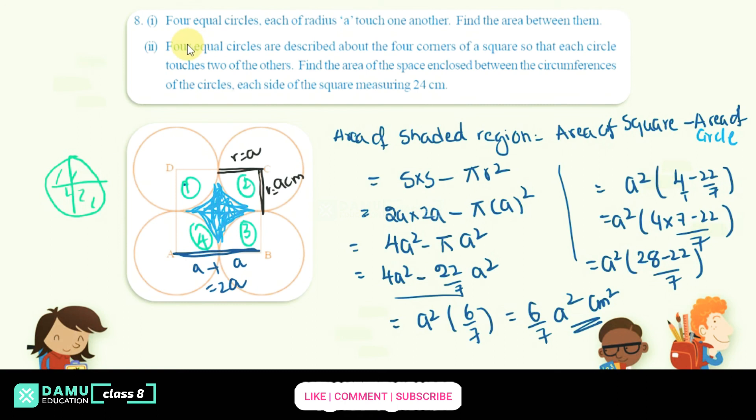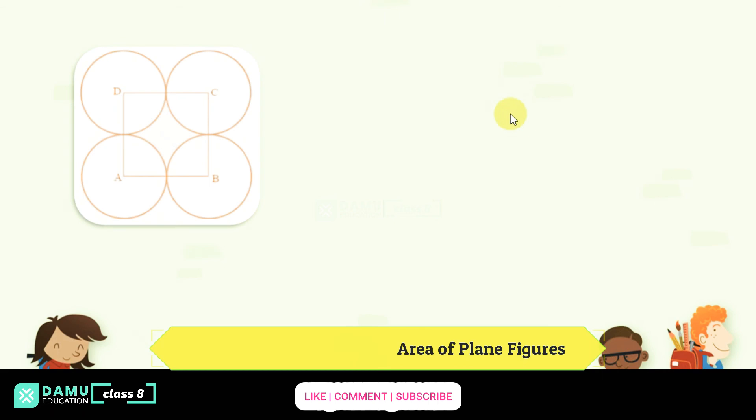So let's take a square into 6 by 7. So what is that, 6 by 7 A square centimeter square is the area between them. So in this second one, they asked us to find 4 equal circles described about the 4 corners of a square so that each circle touches 2 more circles. Find the area of the space enclosed between circumference of the circles. Each side of the square measuring 24 centimeter.